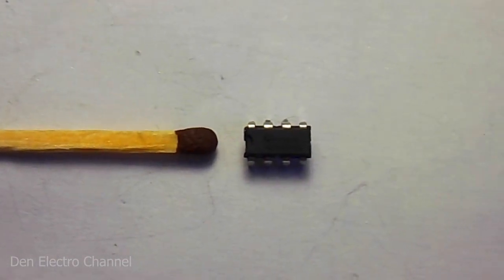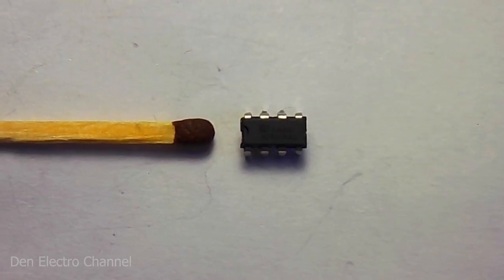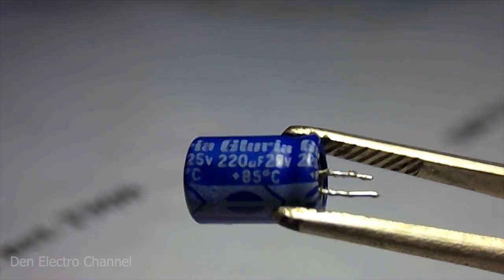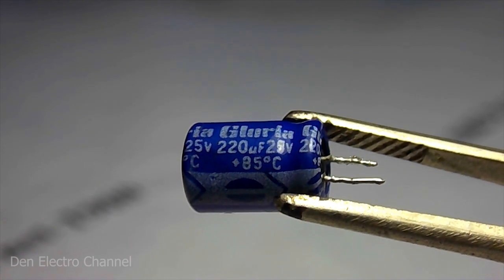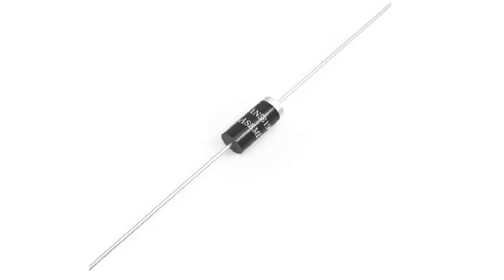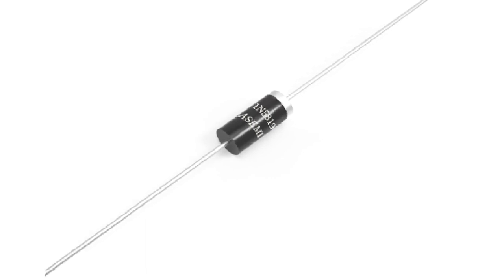It is made in a DIP8 case and has a very small size. I took a capacitor of 220 microfarads, 25 volts to the output of the converter. Diode 1N5819 looks like this.